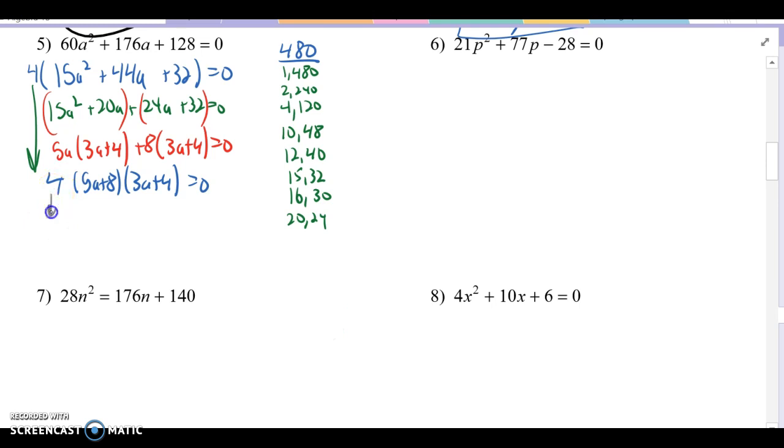Now as we saw last time, if we try to solve for this one, 4 equals 0 never works. That's a dead end. 5a plus 8 equals 0. Set this factored part equal to 0. Subtract 8, and we get a equals negative 8 fifths. So there's one answer. And then 3a plus 4 equals 0. Subtract 4. Divide by 3, and we get another answer of negative 4 thirds.